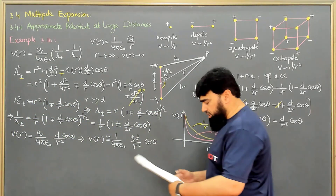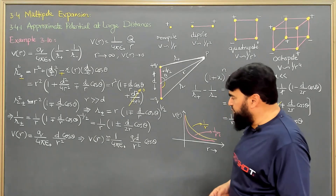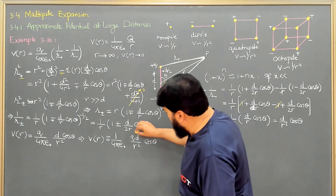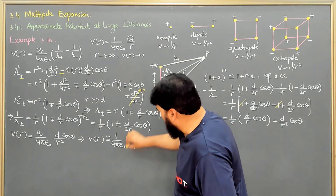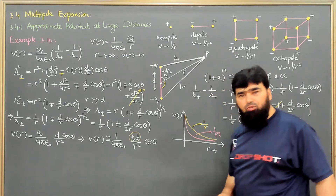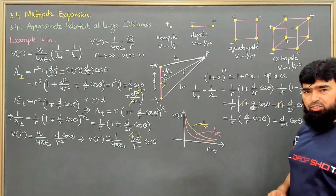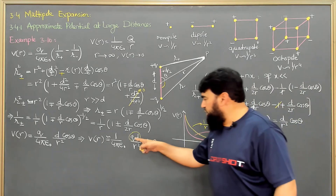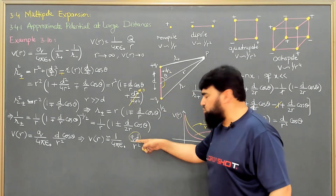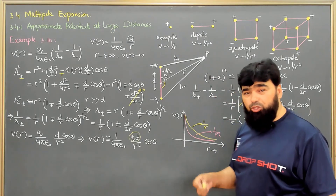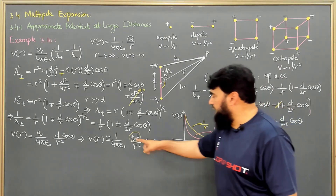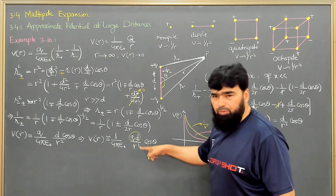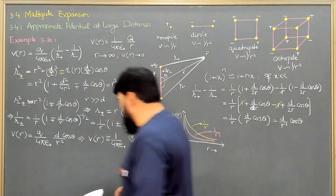There are a few important things in this result. One key term is QD, which is the dipole moment — Q is the charge and D is the separation distance. This QD will be used extensively in electrodynamics. The angle θ also plays an important role here.